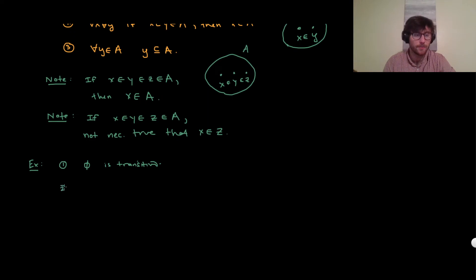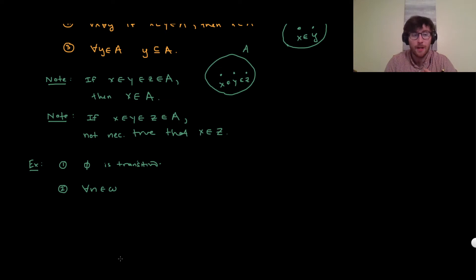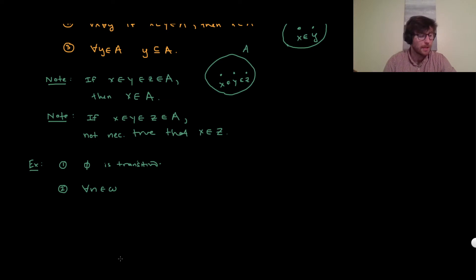Another example: every natural number n in ω is transitive. Remember, ω is our set-theoretic representation of the natural numbers — formally defined as the minimal inductive set — and its elements are called natural numbers. These are all transitive.